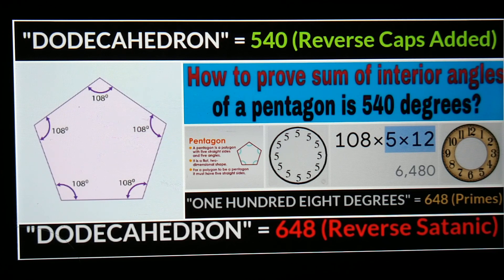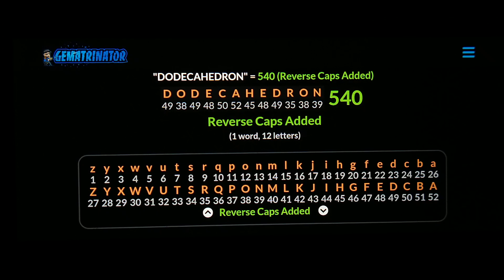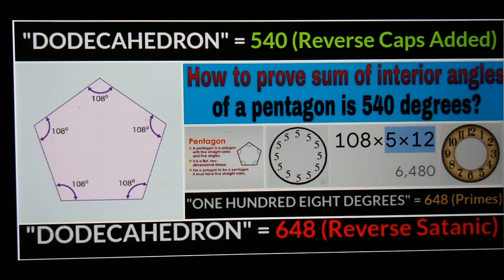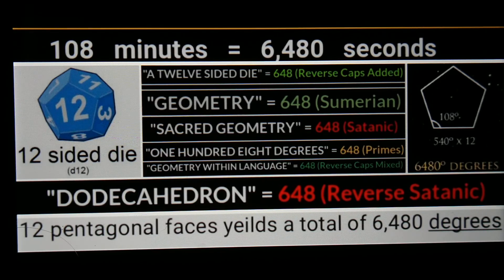It just so happens that the word 'dodecahedron' equals 540 using the reverse caps added cipher — you have to use all capital letters for this to work, but I think it's a legitimate and very appropriate value. So dodecahedron with that cipher equals 540, and looking at a regular pentagon, 540 degrees divided by the five angles gives you 108.